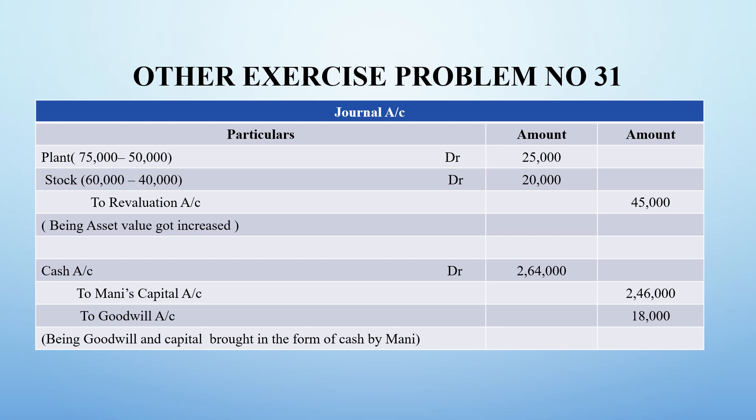For the journal entries, plant and stock account is debited and revaluation account is credited for 45,000, being asset value increased. This is because when asset value increases, it is debited on the asset side and credited on the revaluation account.